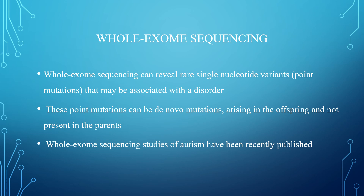Whole-exome sequencing can reveal rare single nucleotide variants, that is point mutations that may be associated with disorders. These point mutations can be de novo mutations arising in the offspring and not present in the parents. Whole-exome sequencing studies of autism have been recently published.